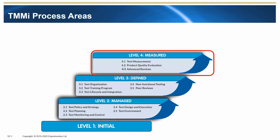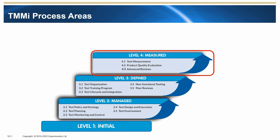There are three process areas within Maturity Level 4: Test Measurement, Product Quality Evaluation, and Advanced Reviews. The Test Measurement process area looks for the use of appropriate measurements to support the evaluation of process performance, product quality, and the effectiveness of test process improvements. Product Quality Evaluation develops quantitative measurements of product quality through measurement of specific product quality goals. Advanced Reviews builds on peer reviews at Level 3 to measure product quality early in the life cycle and to align dynamic testing with static testing.